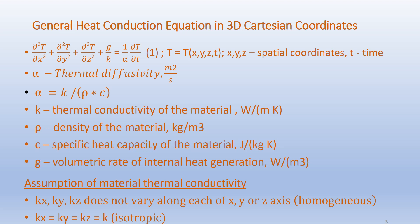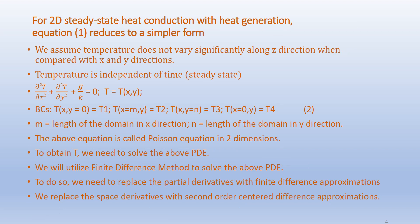We assume the thermal conductivity is homogeneous and isotropic, and hence K is uniform in the domain. For 2D steady-state heat conduction with heat generation, the equation reduces to a simpler form. We assume temperature does not vary significantly along the z direction compared with x and y, and temperature is independent of time. Accordingly we get: ∂²T/∂x² + ∂²T/∂y² + G/K = 0.